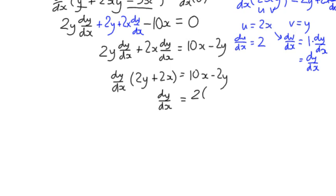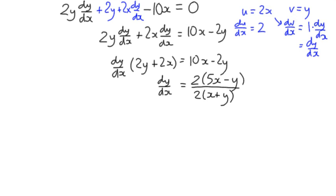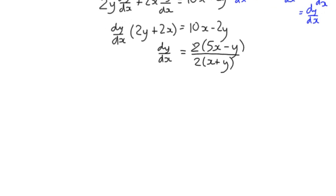I'll take a common factor of 2 out here as I'm rewriting it. I'll put x + y rather than y + x just because I like that to be in alphabetic order. We can divide through by 2, and dy/dx = (5x - y)/(x + y). And there we have our derivative which involved using the product rule.